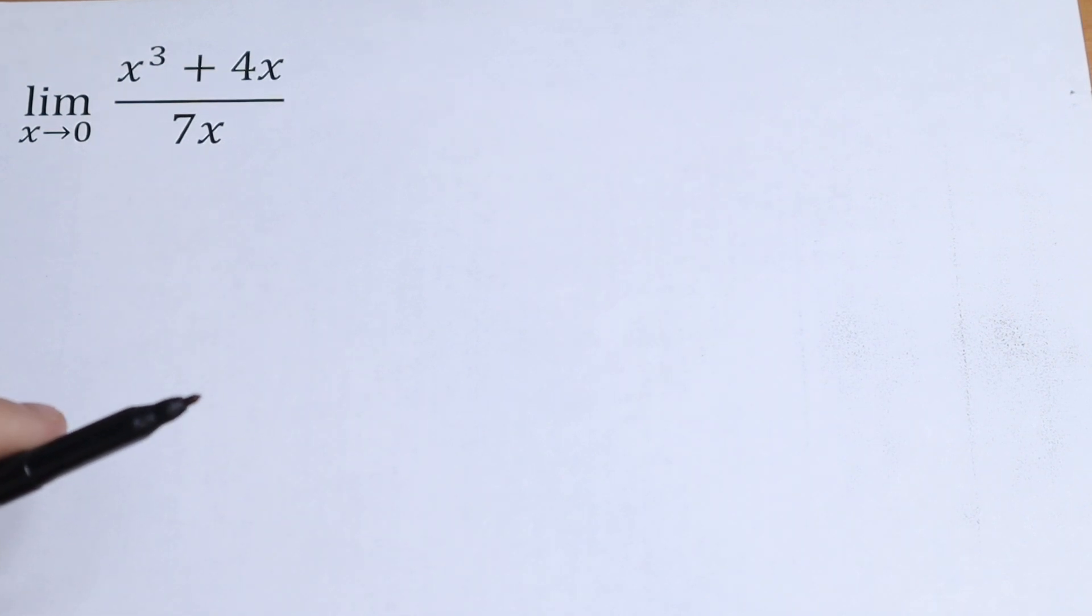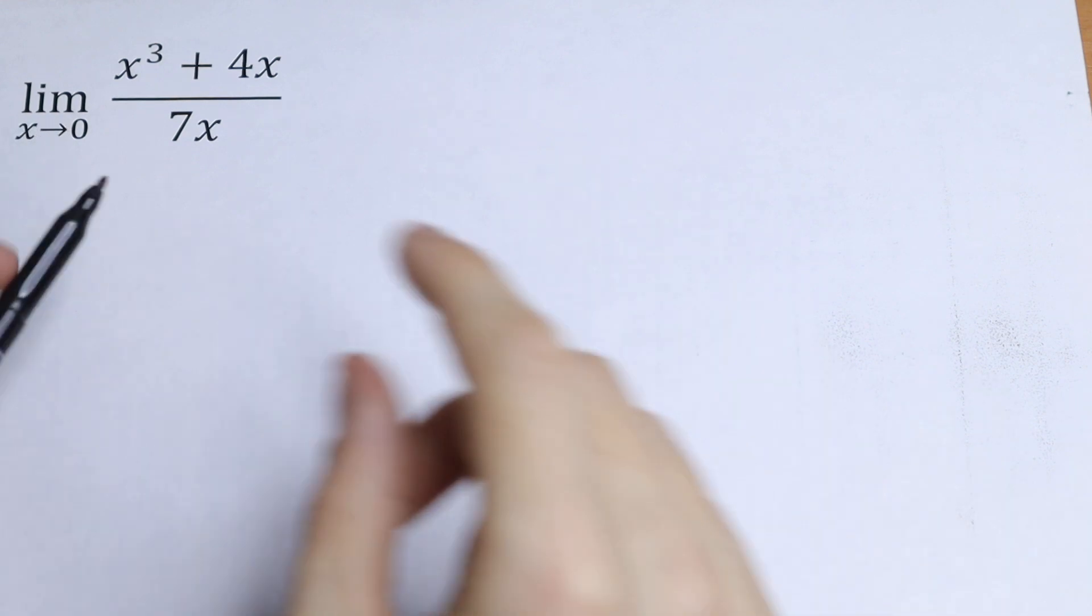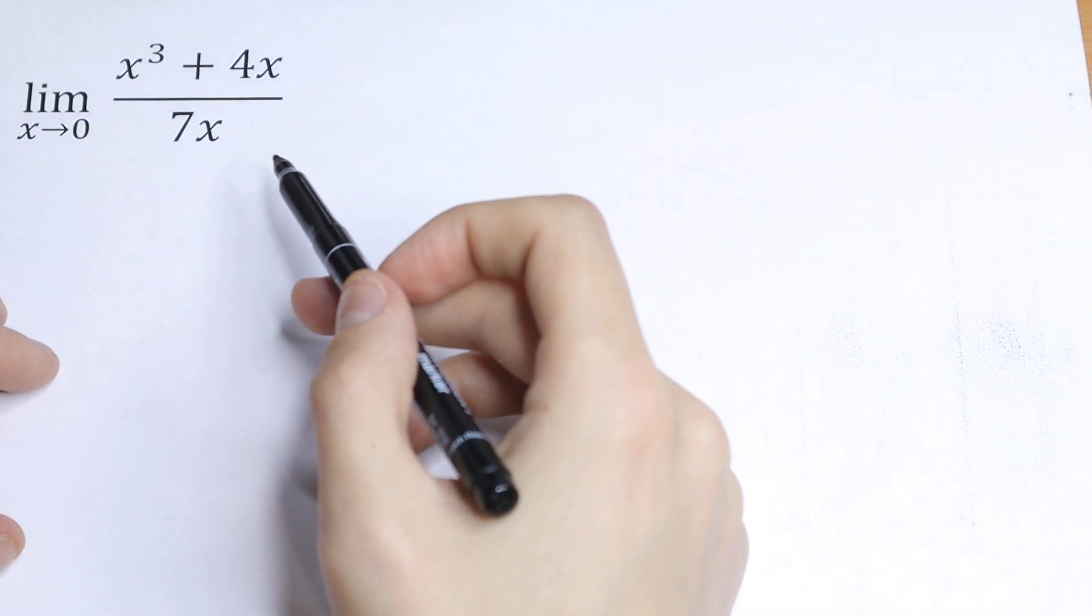Hello everyone and welcome back to High Mathematics. Today we have an interesting limit. What is the limit as x approaches 0 of the function x cubed plus 4x all over 7x?